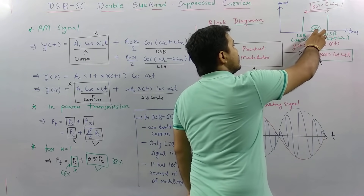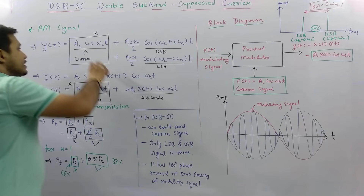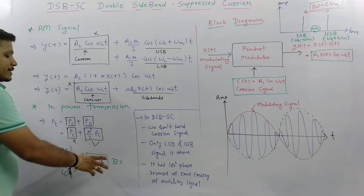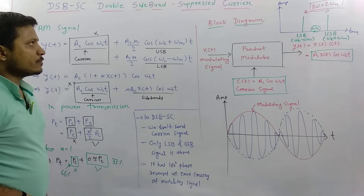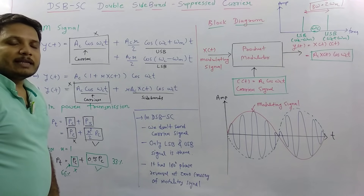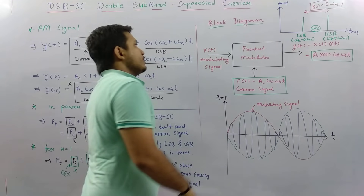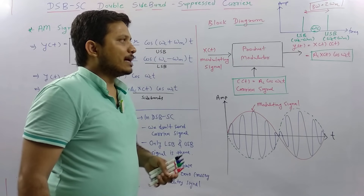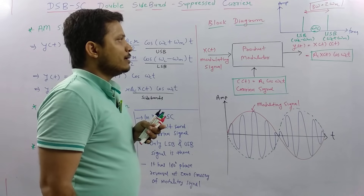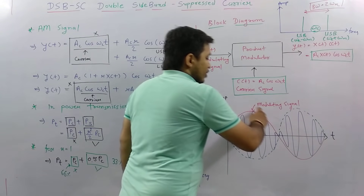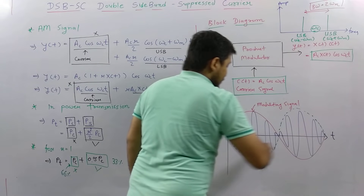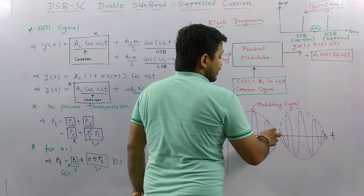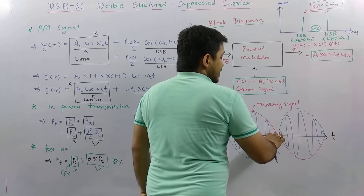So comparing DSBSC to AM: in DSBSC we have removed the carrier signal and only send the upper sideband and lower sideband, saving a large amount of transmitted power. The basic generation of a DSBSC signal is achieved by a product modulator — by simply multiplying the modulating signal with the carrier. When zero crossing of the modulating signal occurs, the carrier signal undergoes phase reversal. You can see this DSBSC signal shown in blue, where there is phase reversal at the zero crossings of the modulating signal.